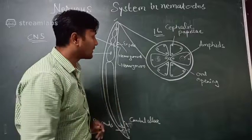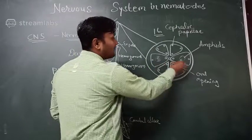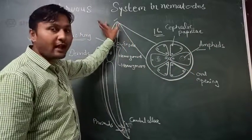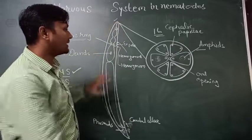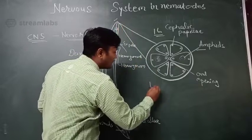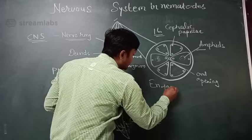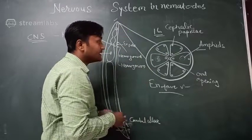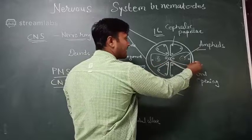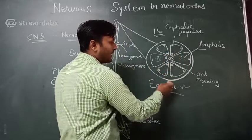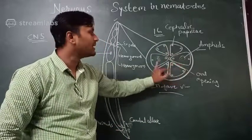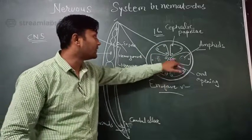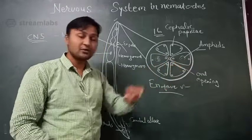These are also called cephalids. One pair of amphids is also present on the oral opening and cephalic region of the nematode. When we cut the nematode head region in an en face view, you can see six lips — two in lateral position, two in sub-dorsal position, and two in sub-ventral position — having 16 papillae and one pair of amphids. These papillae are chemoreceptors, and the amphids are both chemo- and mechanoreceptors.